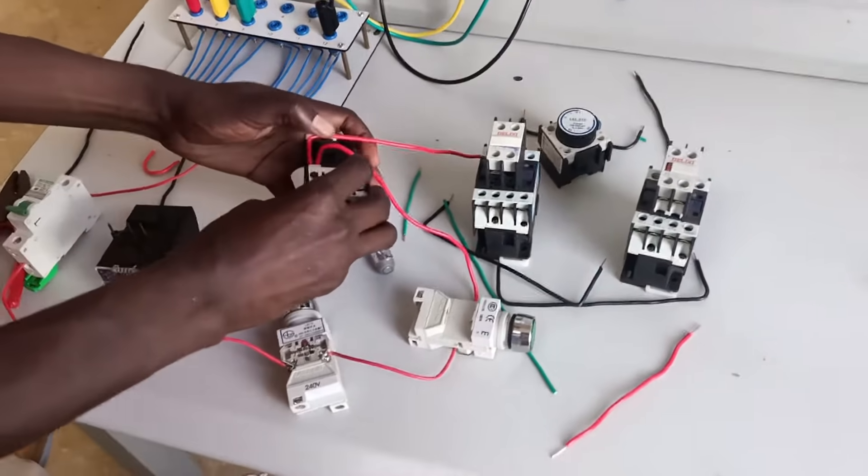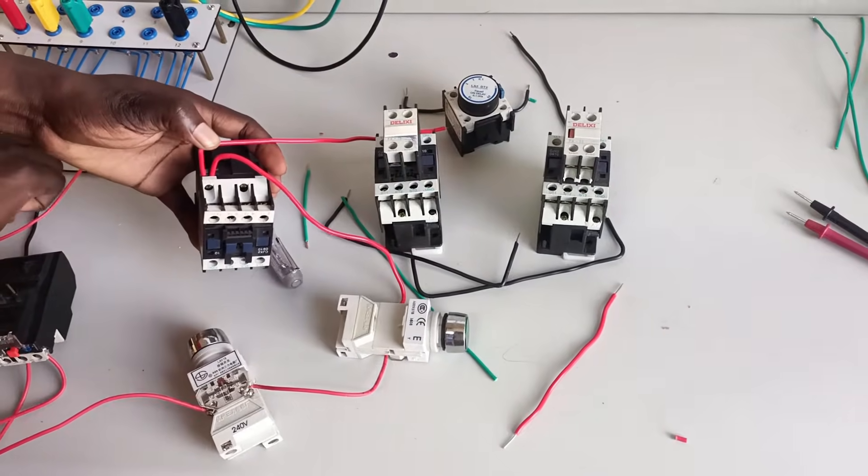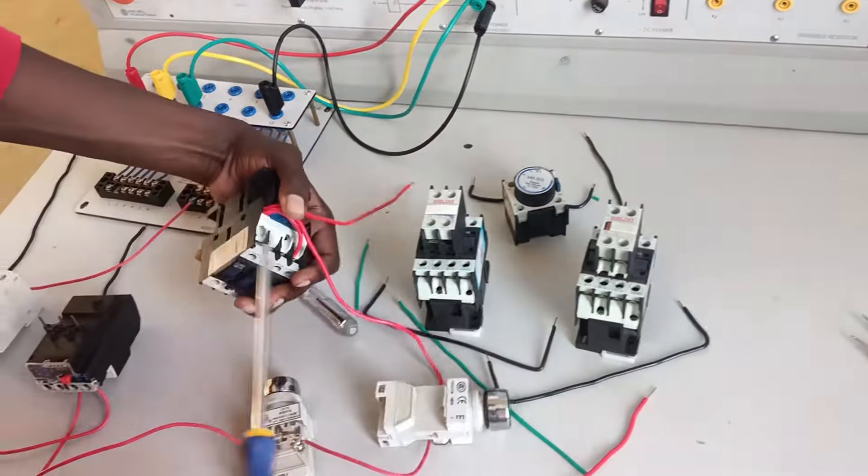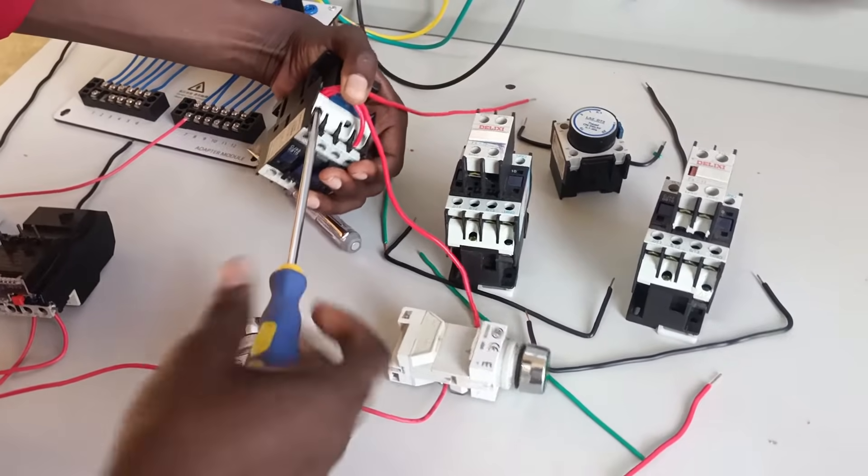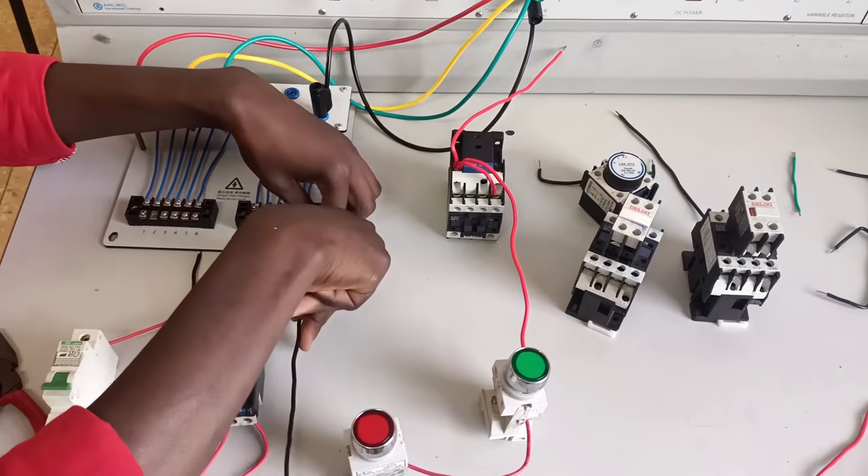From here you'll see three cables emanating. One cable is from the start push button, another cable is going to the timer, and another cable is looping to the normally open contacts on the contactor.